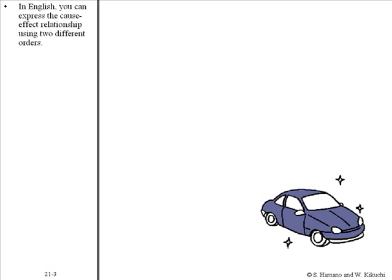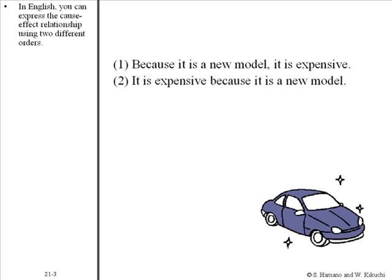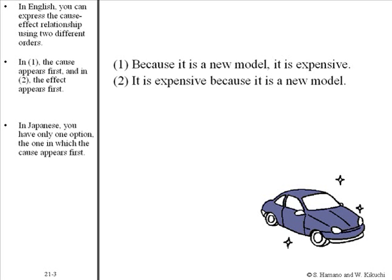In English you can express the cause-effect relationship using two different orders. In one, the cause appears first, and in two, the effect appears first. In Japanese you have only one option, the one in which the cause appears first.